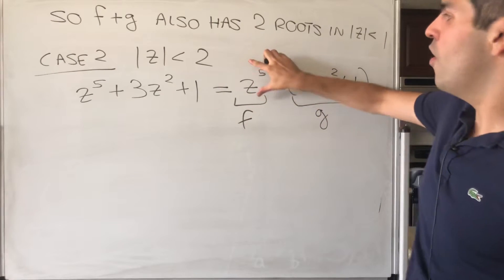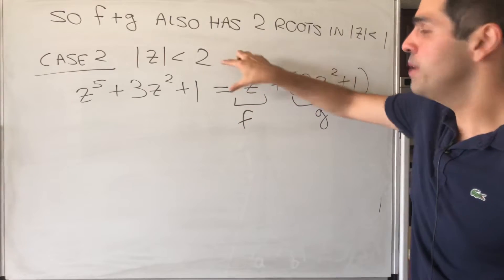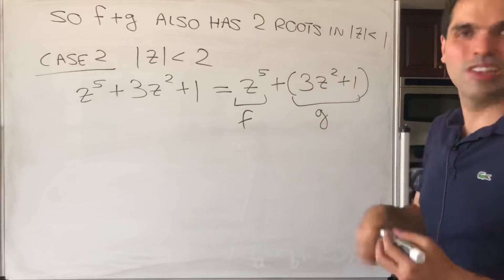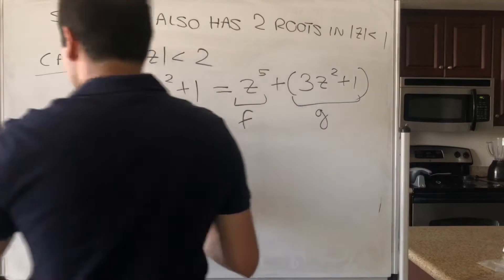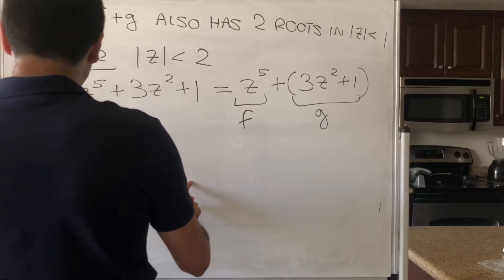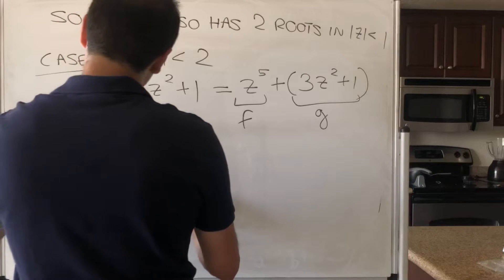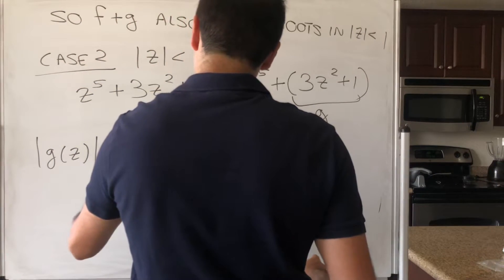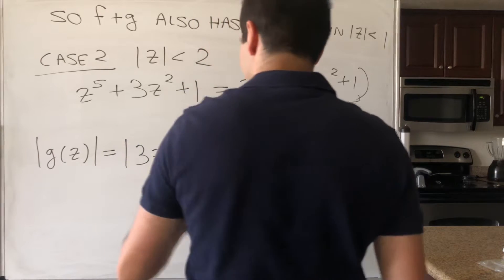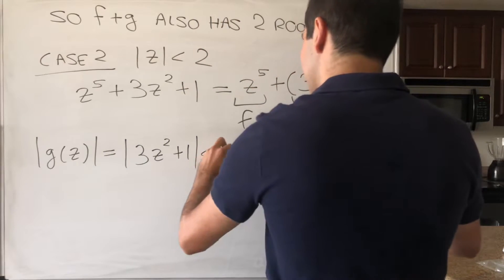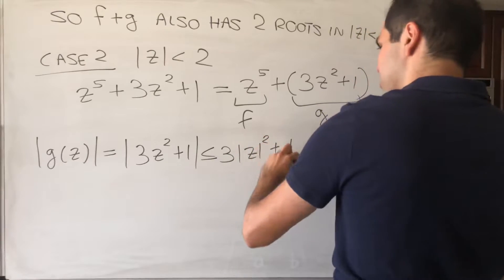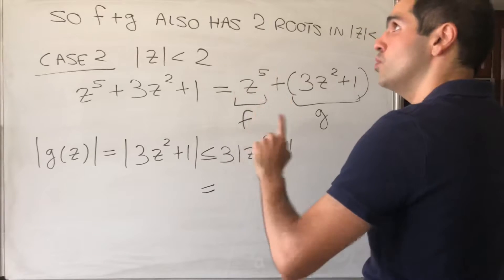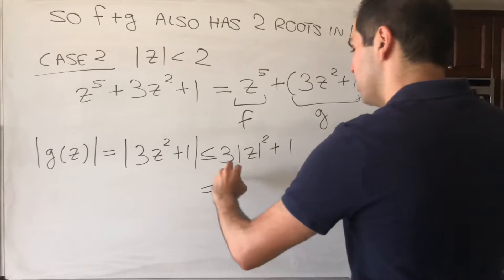So this will be the dominating function, and this will just be the perturbation, and the idea is we know how many roots this has in the bigger one, and then just by perturbation we know the total number of roots in the smaller one. But of course, let's show that it dominates. So |G(z)|, again, is the absolute value of 3z^2 + 1, and that's less than or equal to 3|z|^2 + 1. And so 3 times 2^2, so 12 + 1, is 13.